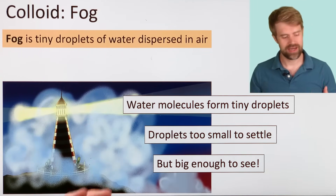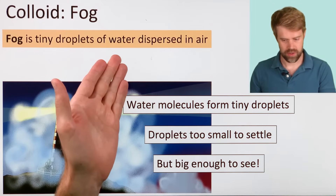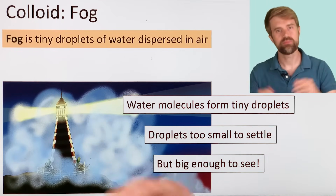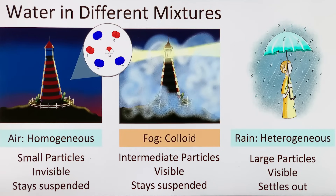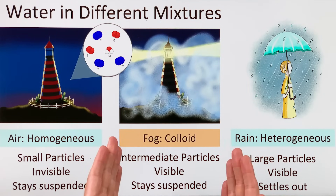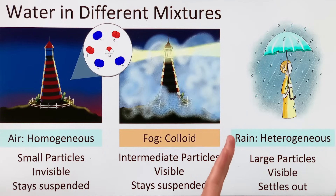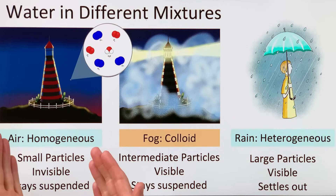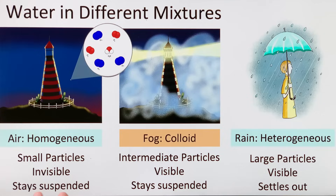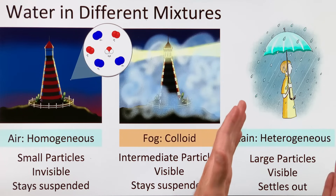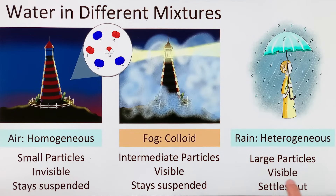Fog is made of very tiny drops of water dispersed — or spread out — in the air. That's what we mean when we say colloids fall between homogeneous and heterogeneous mixtures. The particles have an intermediate size. Like a homogeneous mixture, fog stays suspended and doesn't settle out. But like a heterogeneous mixture, the particles are visible — you can see them.